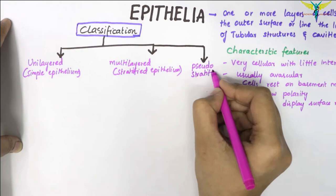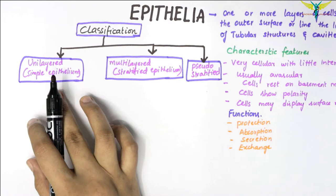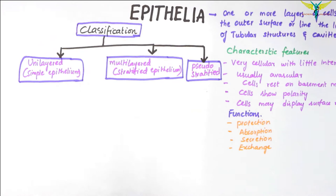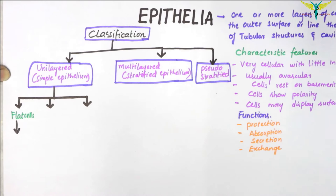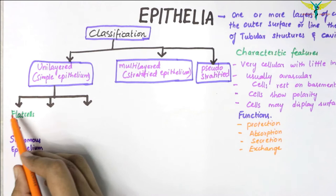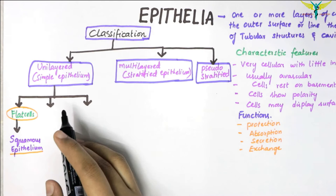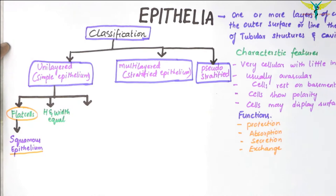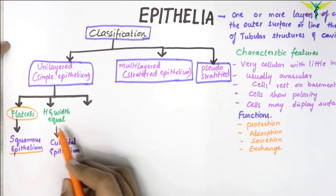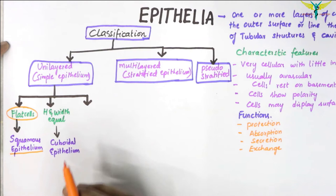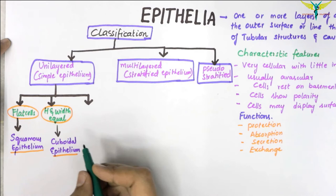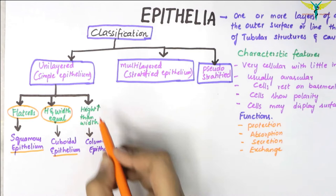In the unilayered or simple epithelium, when the cells are flattened and their height is very little compared to their width, such epithelium is called squamous epithelium. The second variety is cuboidal epithelium, in which the height and width of the cell are more or less equal — they look like squares in section. The third type is columnar epithelium, where the height of the cell is greater than its width.